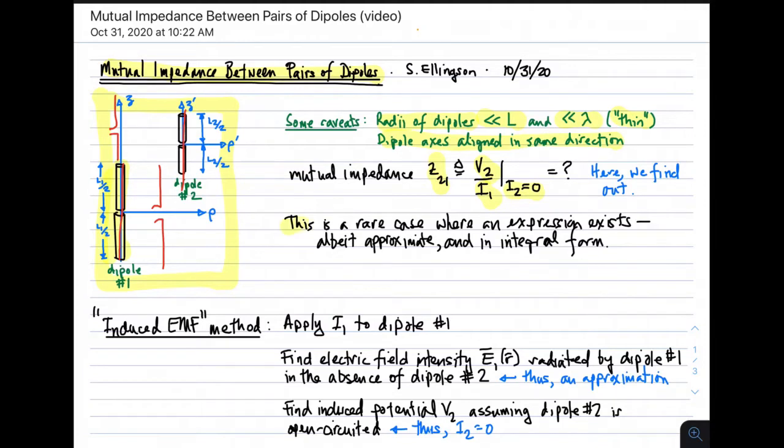This is one of the rare cases where an expression for mutual impedance between two antennas exists, although the expression is approximate and in integral form, meaning you typically have to do numerical integration. Nevertheless, the expression is quite useful for analyses of arrays consisting of dipoles and gives insight into how mutual coupling works generally for any kind of antenna.